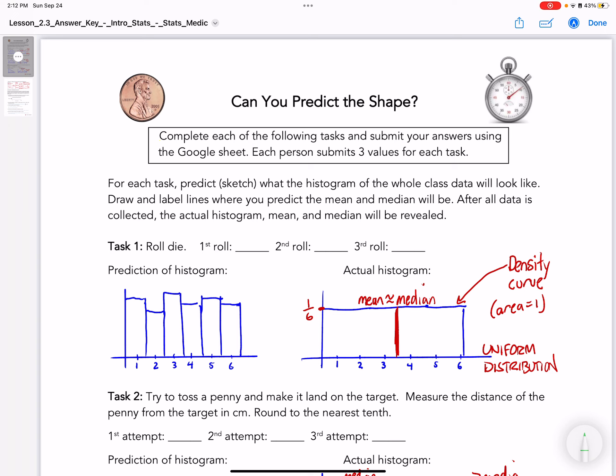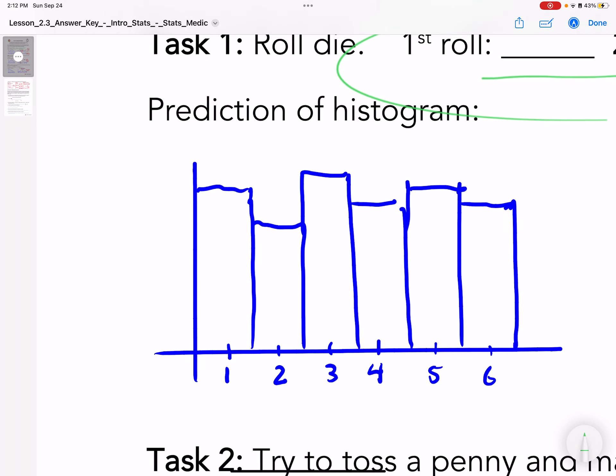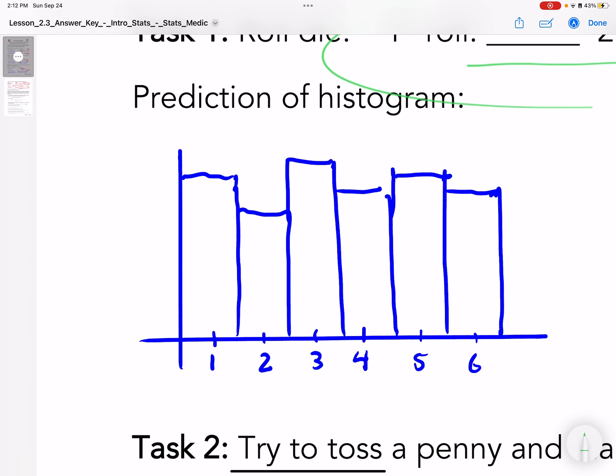I'm going to describe what we did in class if you missed it. The first thing we did is I had every single person roll a die three times, then record the results. I asked them to predict, if 30 people in the class each did it three times, there's going to be 90 results. Predict what it's going to look like.